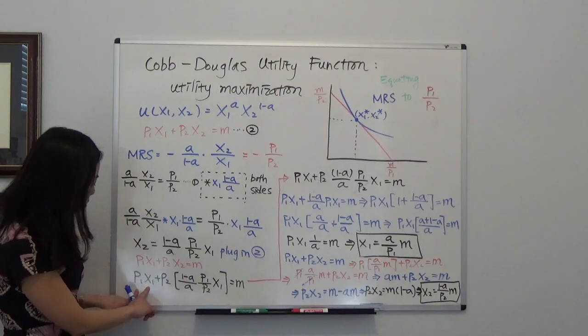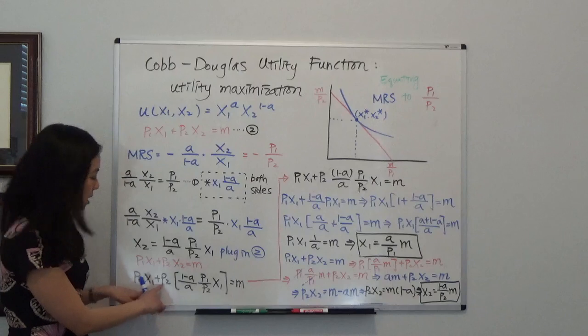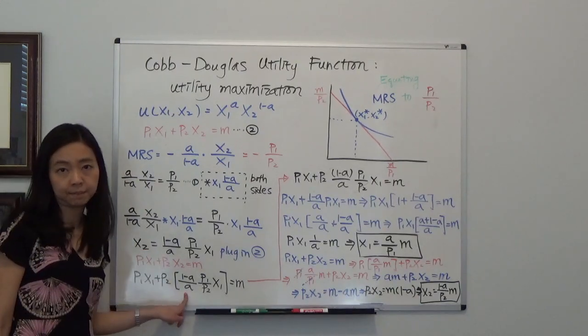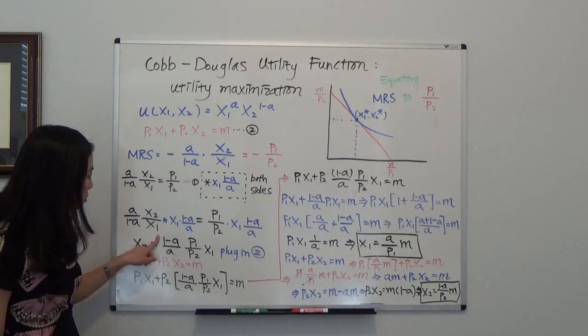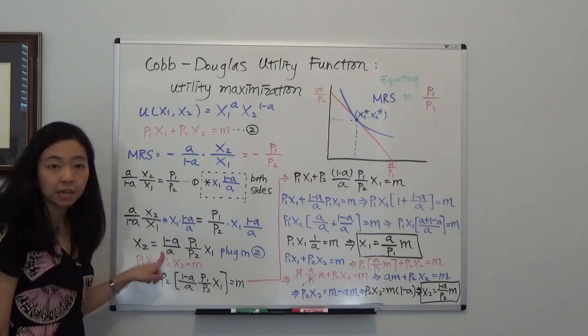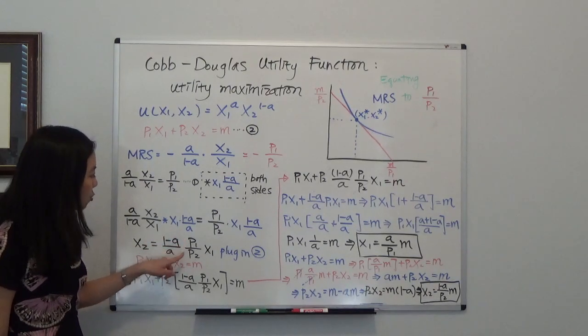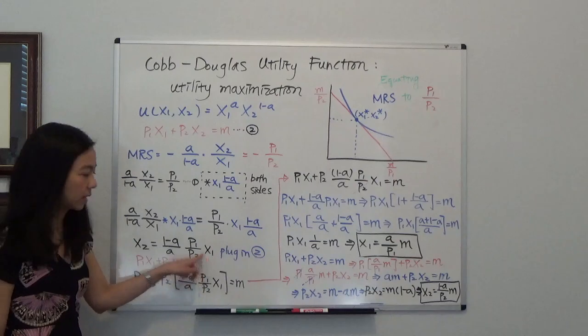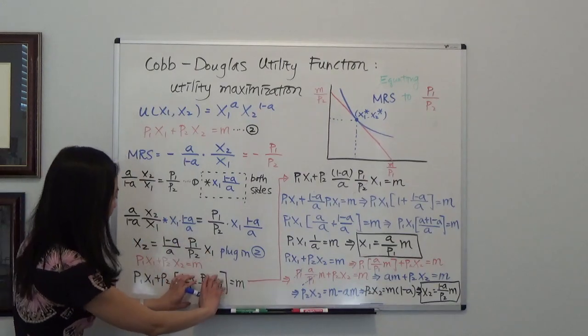So it's your p1x1 plus p2x2 equals m. And I'm not going to do anything to p1x1. But for x2, I'm going to plug this term in. So x2 is equal to 1 minus a divided by a times p1 over p2 times x1. So I'm just going to plug this in here.